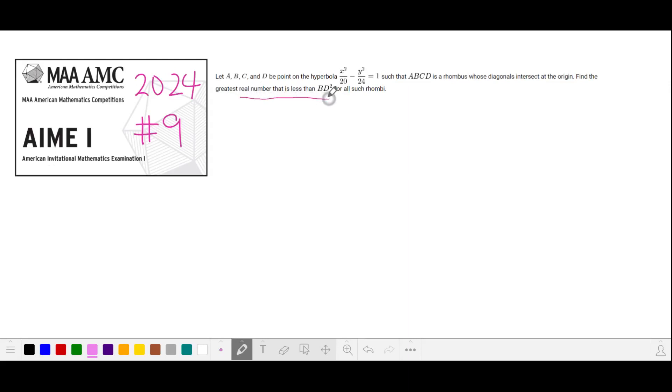We want to find the greatest real number that is less than the length of the square of a diagonal for all of the rhombi that satisfy the problem statement. Since they don't specify which diagonal this is, we'll choose the smallest diagonal BD.